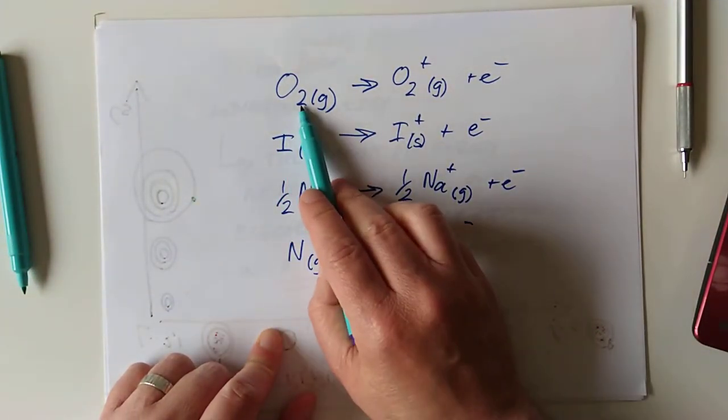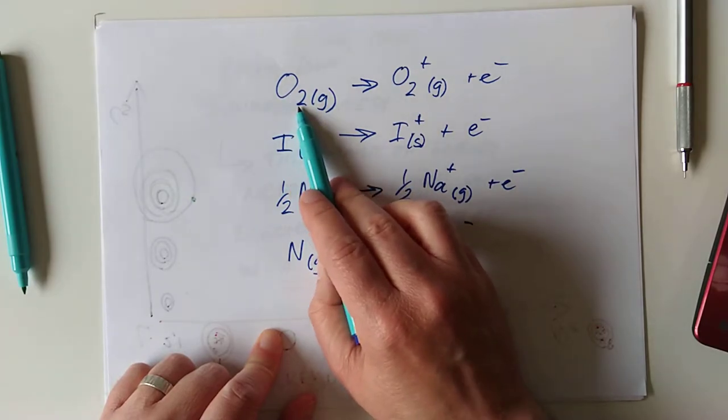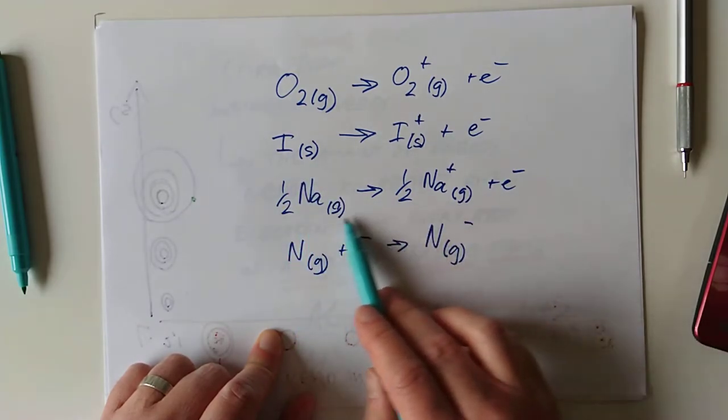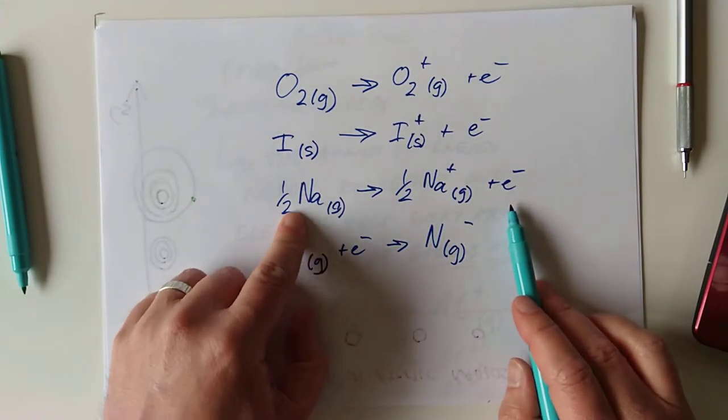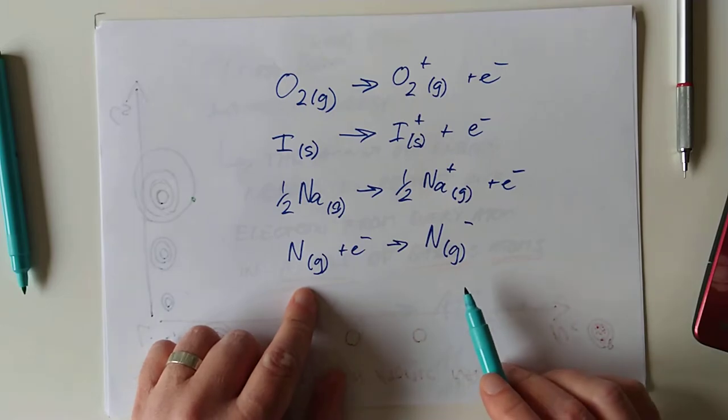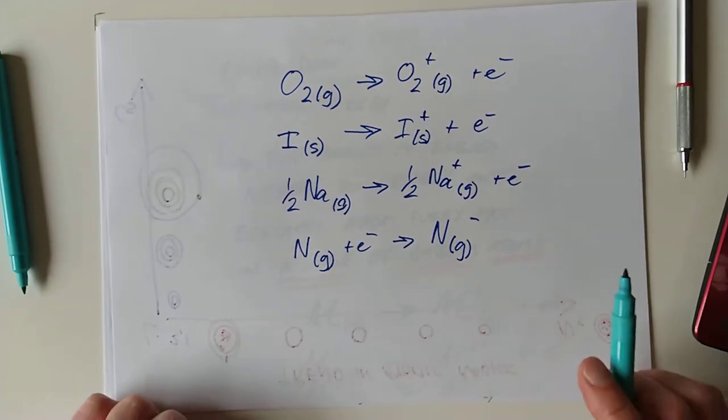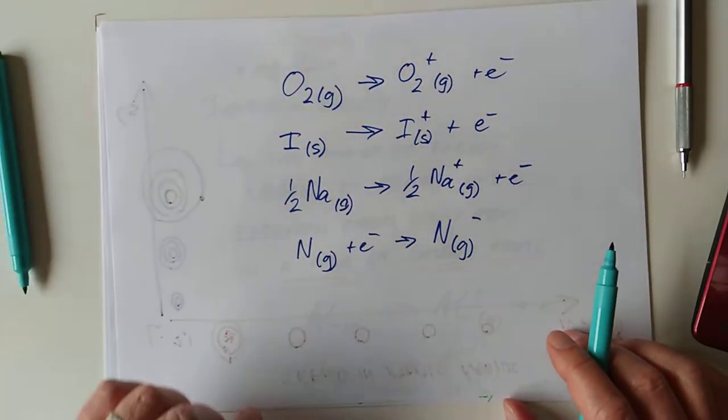None of these are the definition of the first ionization energy. This is wrong because it's a molecule. This is wrong because it's a solid. This one here is wrong because it's half a mole of sodium. And, lastly, this one is wrong. Hopefully you can see why this one's wrong. Because we're adding electrons instead of removing them. So, all of these are potential tripwires.